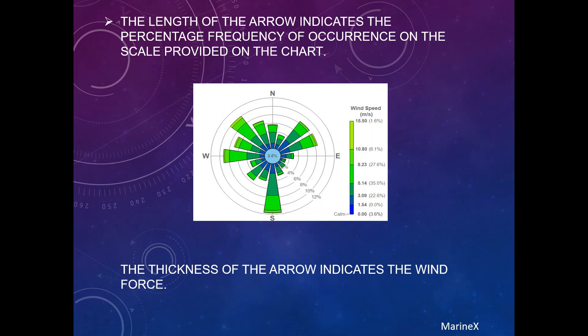Now, how to find the frequency of occurrence of the arrows or of the wind. So as you can see this southerly wind, it has ended on between 10 to 12% of this circle. So it is exactly almost 11%. You can see this westerly spoke, it is in between the 8% and the 10%. It is almost 9% of the occurrence. So this is the way how we can find the frequency of occurrence.